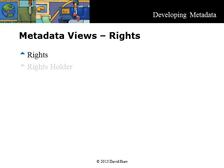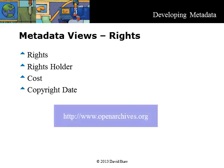Digital rights management describes the types of rights we have and the obligations we have to respect them. Who currently owns the copyrights, and when will they expire? Some types of rights are web-only, print, presentation, restricted, or unrestricted. Another standard worth looking up is the open archive metadata schema.